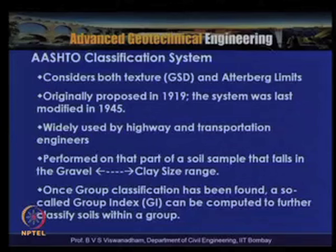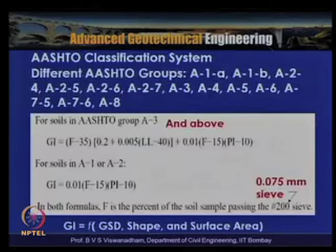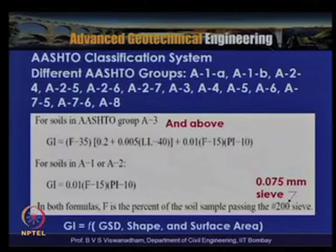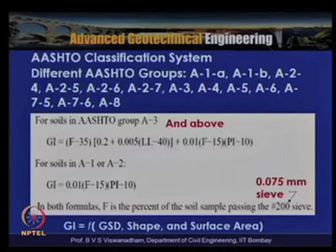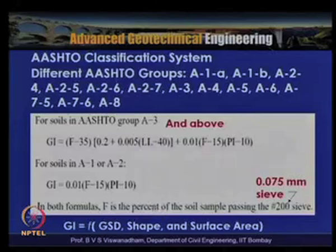The AASHTO system classifies soils in the gravel to clay size range into groups A1 through A8, with some subgroups. A8 is for highly organic soils (peat or muck), classified by visual identification. Once a group classification is formed using grain size distribution and Atterberg limits data, a reference index called the Group Index (GI) is used to further classify the soils. A higher value of GI indicates inferior characteristics.